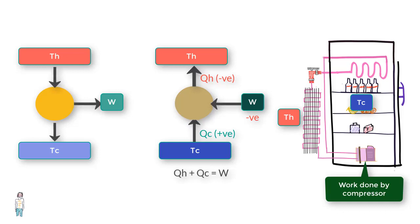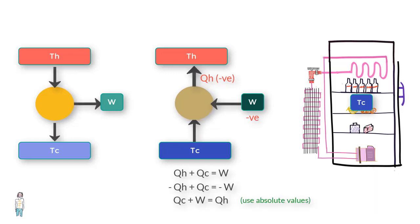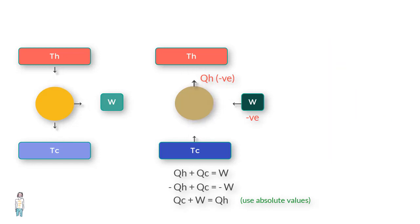If we put the values of various terms along with the correct signs, what we get is minus QH plus QC is equal to minus W, or QC plus W is equal to QH. You'll need to put the absolute values of W and QH in this equation.